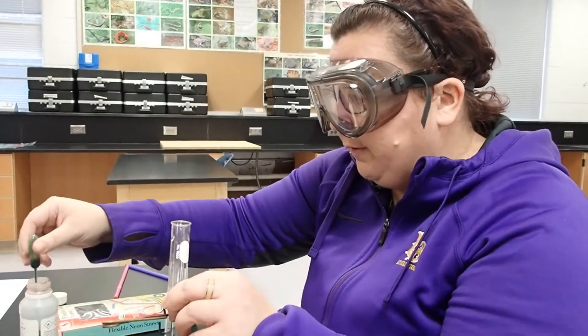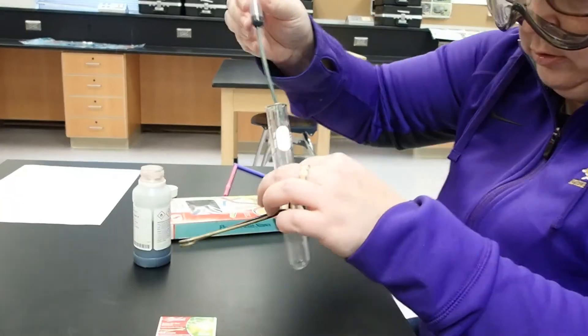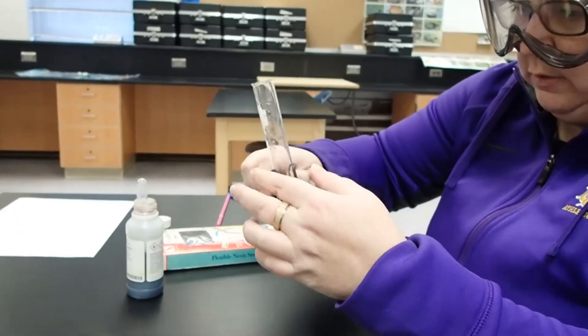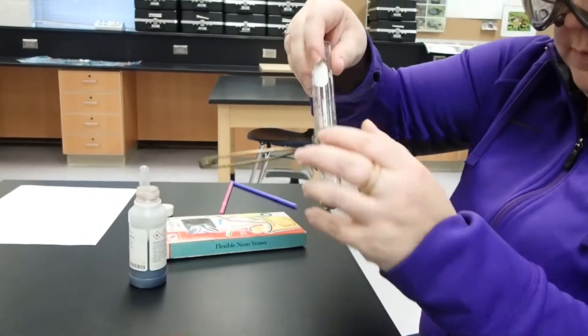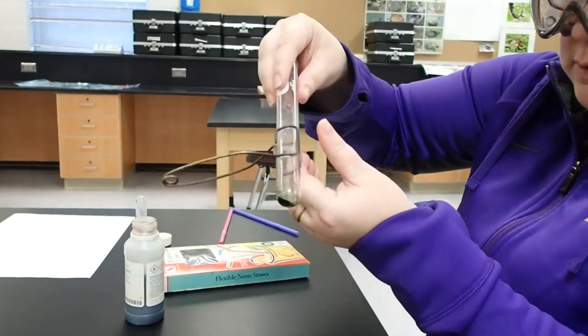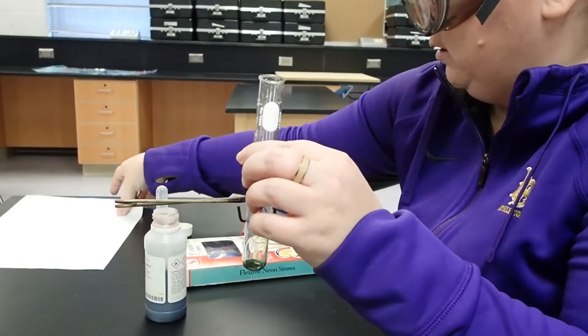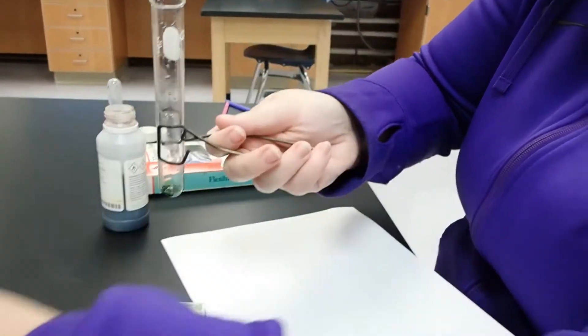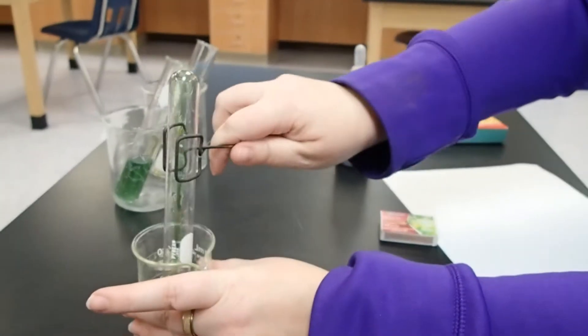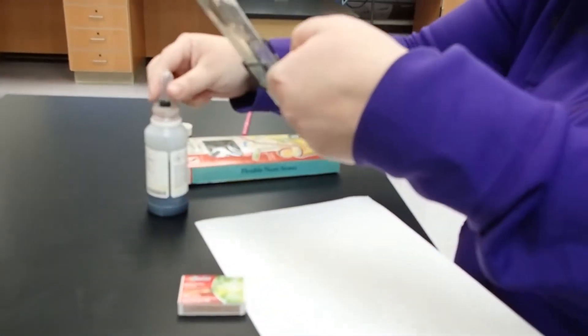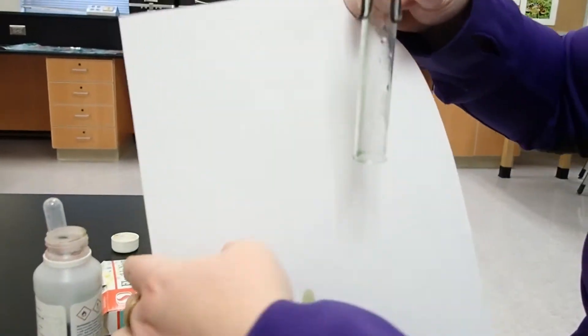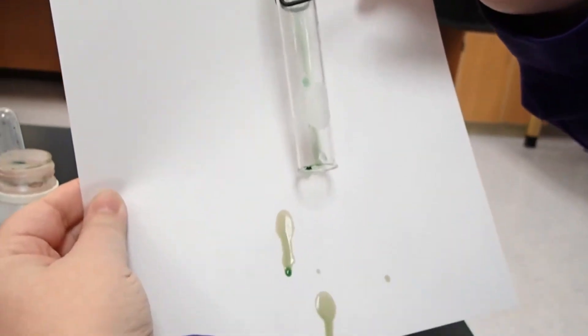I'm going to put in a couple drops of indicator into my test tube and just swirl it around to coat my test tube. It will be a little harder to see the color. It may have been a little too wet. Hopefully you can see that the inside of the tube is green in color.